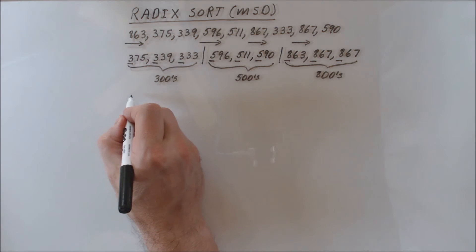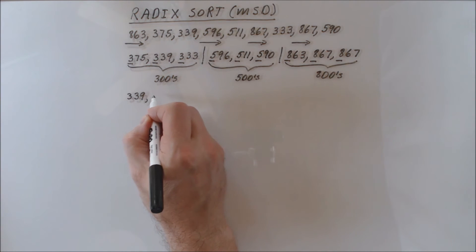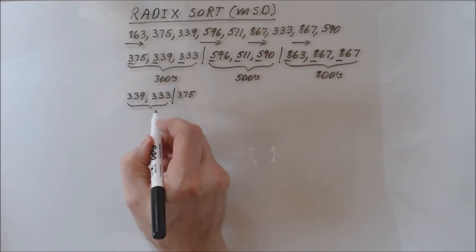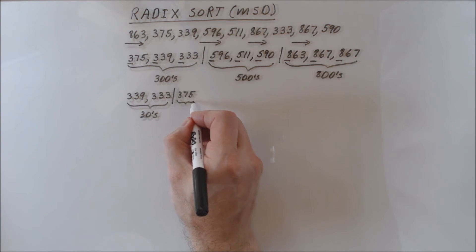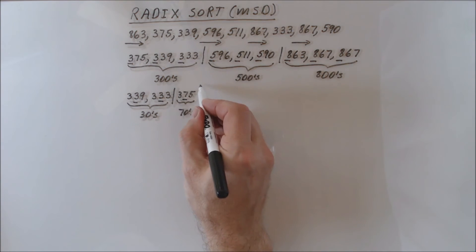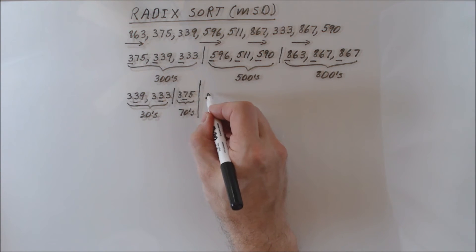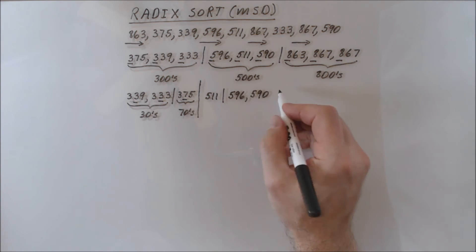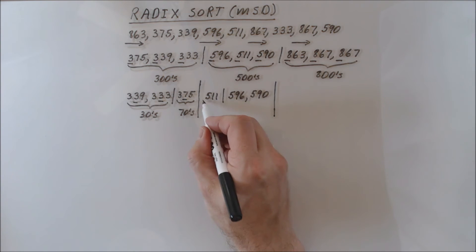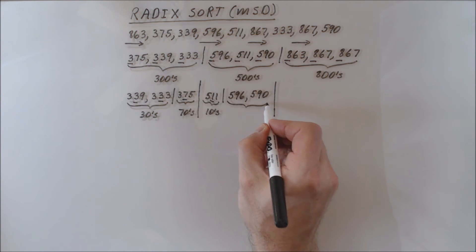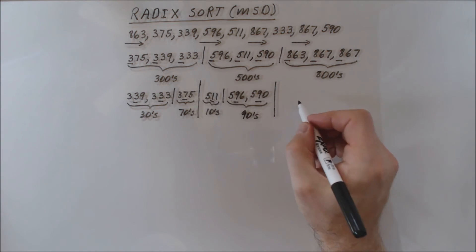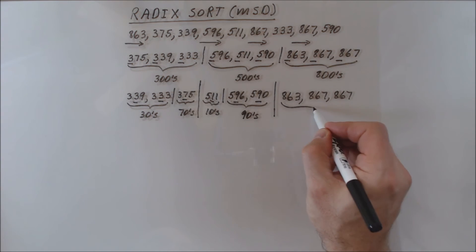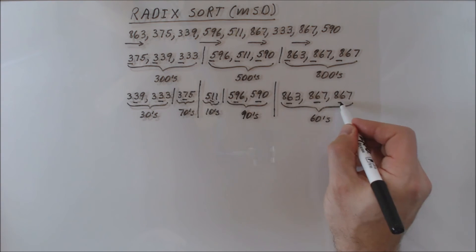In the second pass, radix sort works on each group of hundreds separately using the next digit from the left — the tens digit. Within the group of three hundreds, thirties are grouped together, followed by seventies. Within the five hundreds, tens are grouped together, followed by nineties. Within the eight hundreds, there's only a single group of sixties, and nothing needs to be done. The second pass is now done, which used the second digit from the left to order numbers within each individual hundreds group.